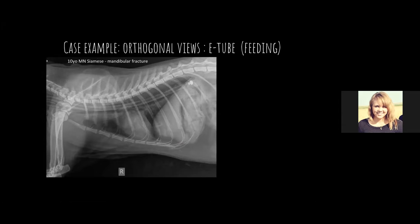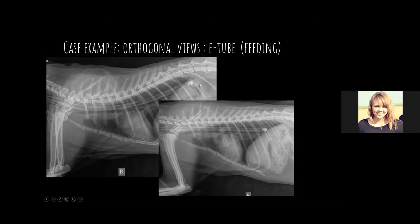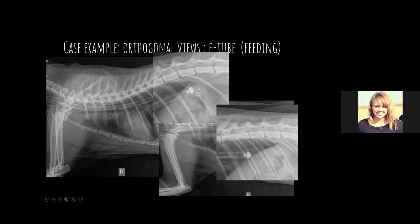Another feeding tube case: instead of going through the nose, a hole was made into the side of the dog's neck to place this esophagostomy tube. It should sit in the esophagus only, not the stomach. We told them the tube was too far in and they needed to pull it back. The tube was within the stomach, which can cause irritation of the caudal esophagus, bad complications, and nausea — especially in small patients.